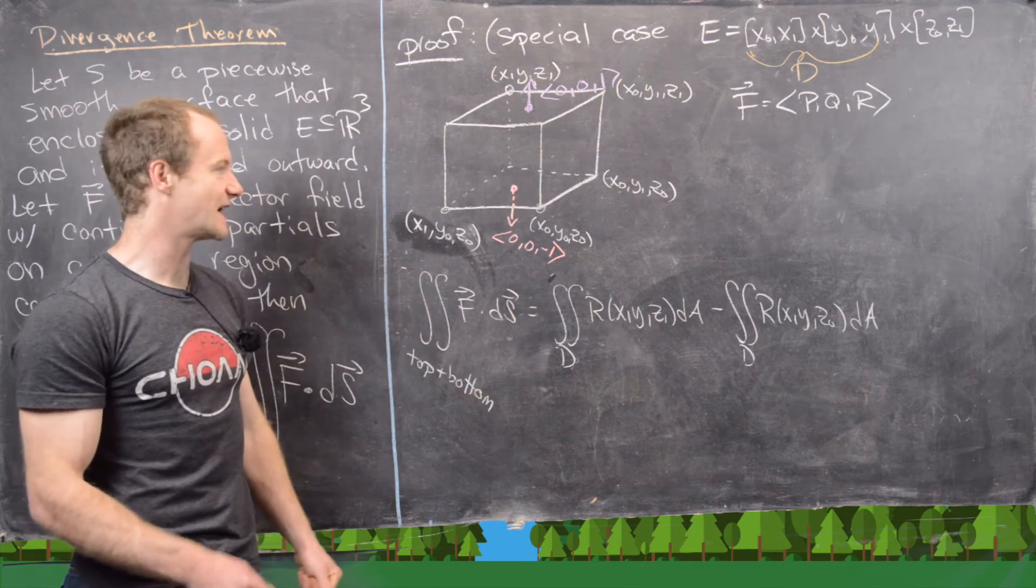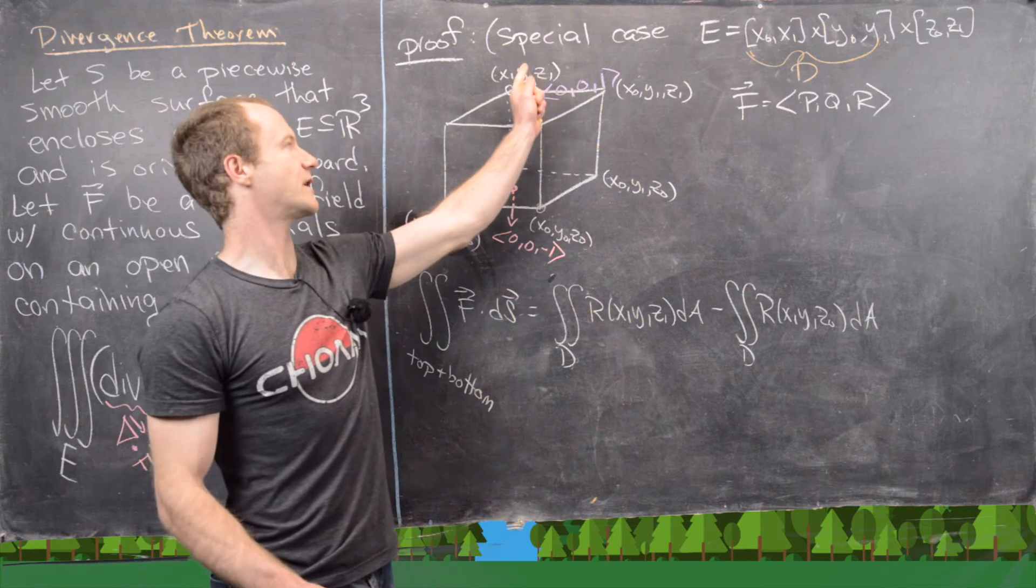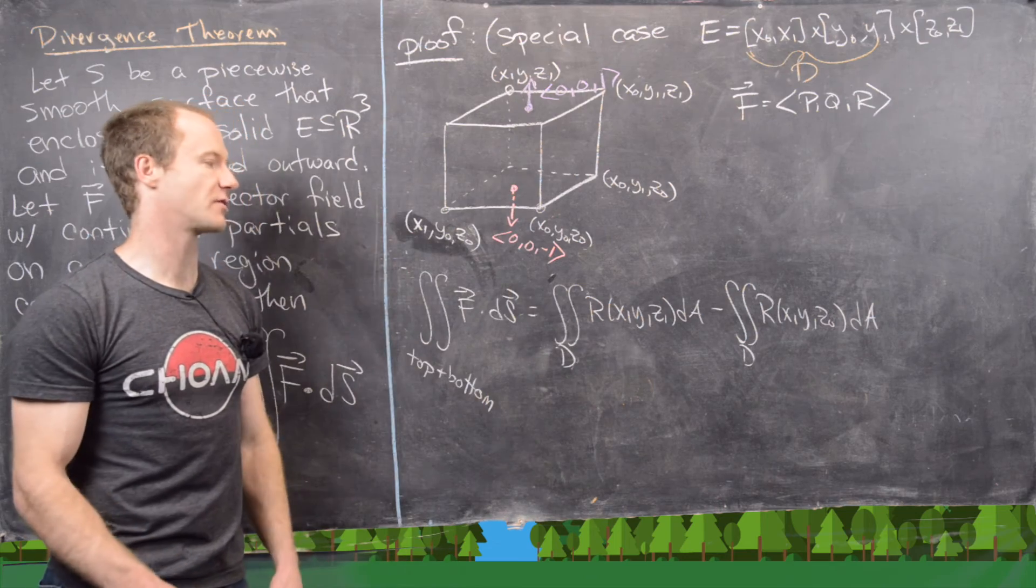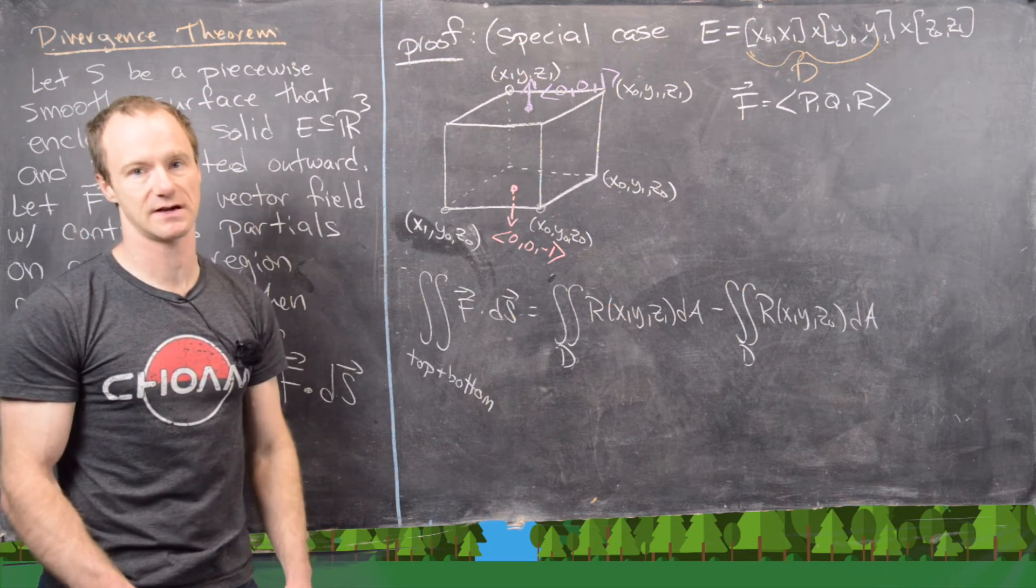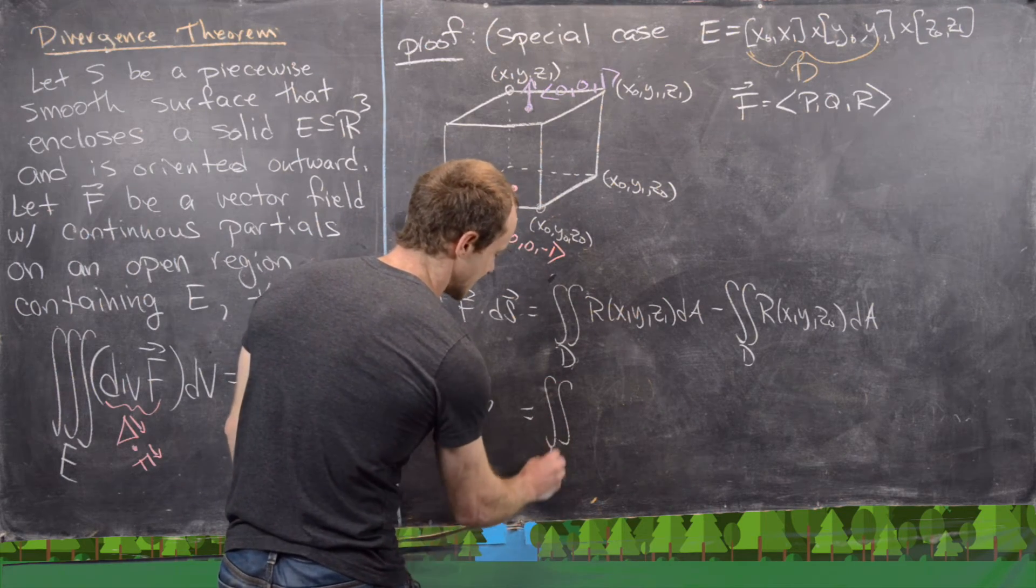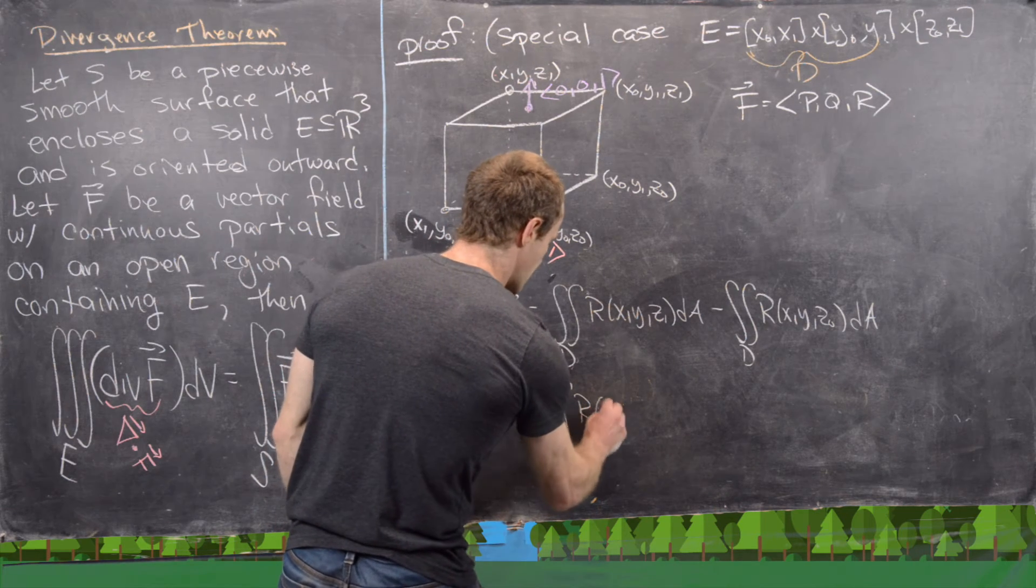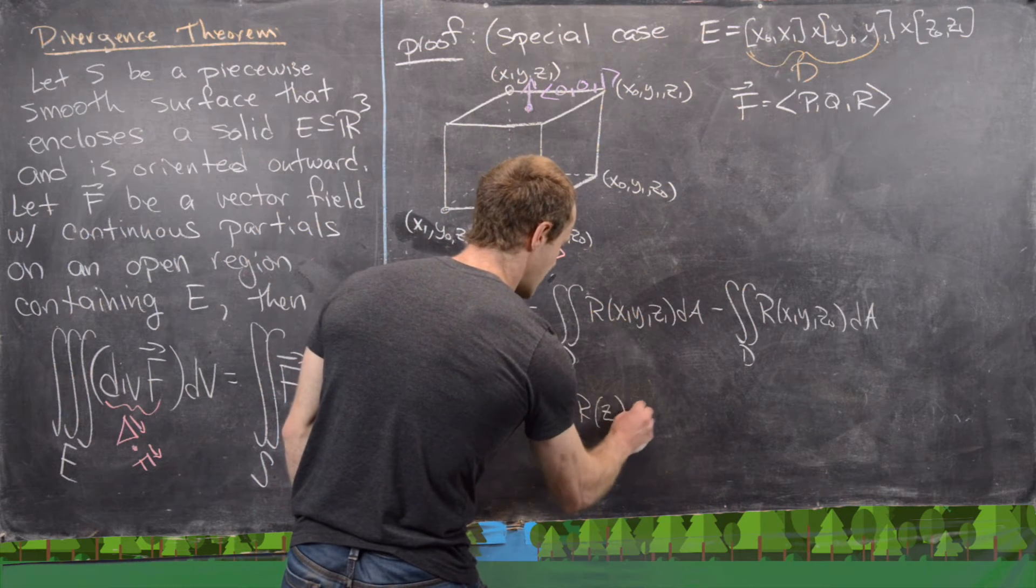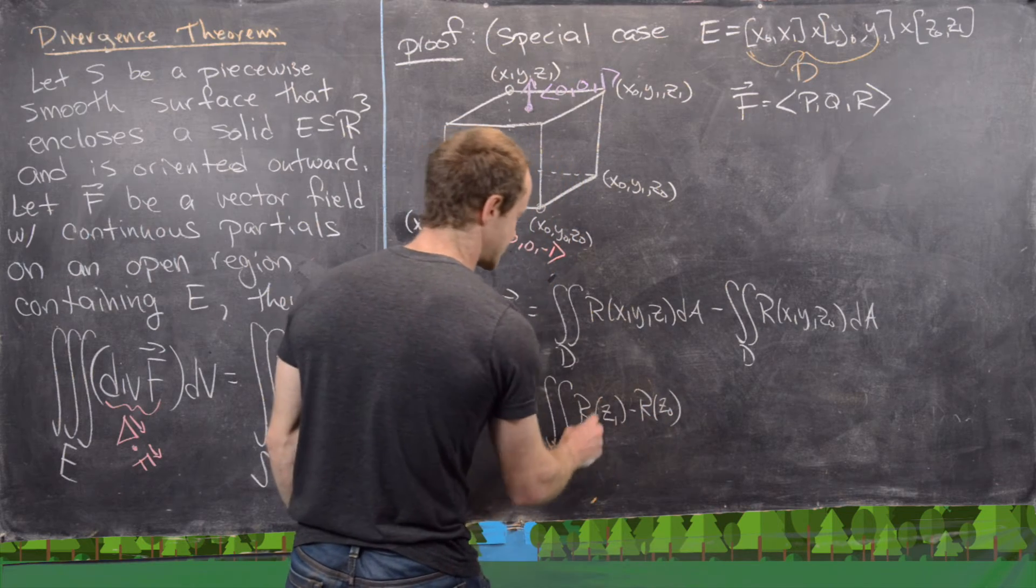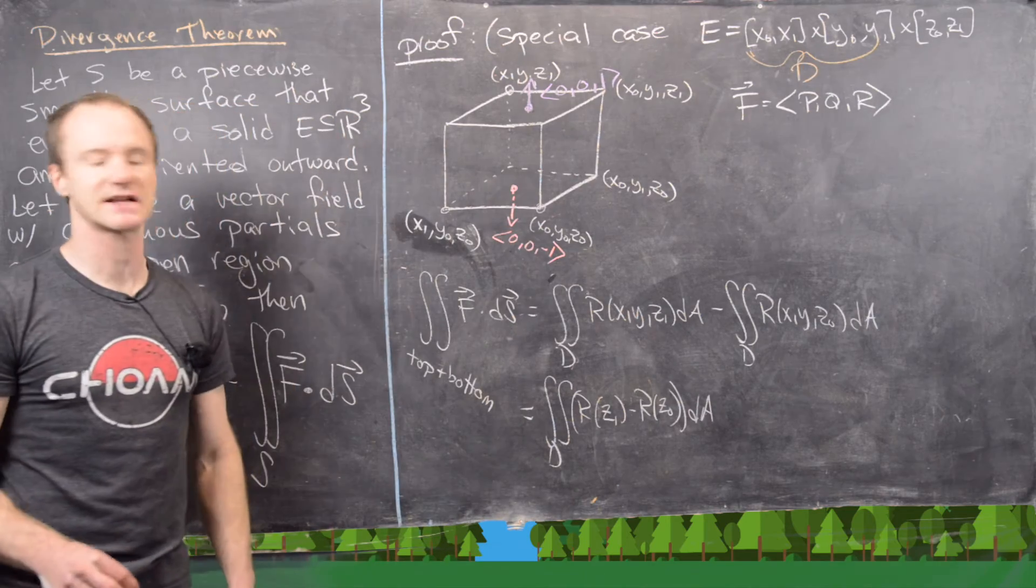And we have a difference of signs here because we always have an outward pointing normal, so the outward pointing normal on the top gives us the positive sign and the outward pointing normal on the bottom gives us the negative sign. So now I want to put these two together. Notice we can write this as the double integral over D of r evaluated at z₁ minus r evaluated at z₀, where I've suppressed the x and the y dependence, but this still depends on x and y.